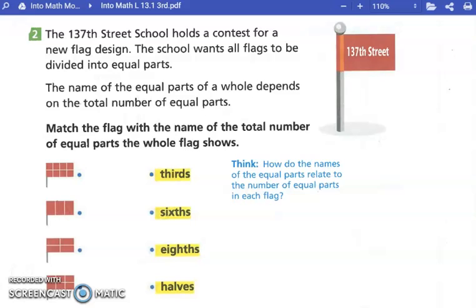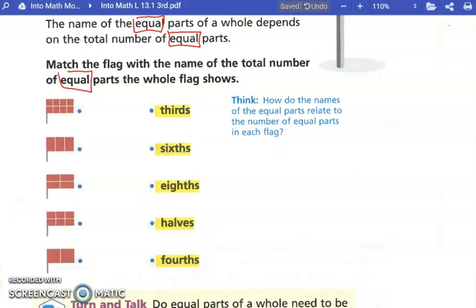The 137th Street School holds a contest for a new flag design. The school wants the flags to be divided into equal parts. Match the flag with the name of the total number of equal parts. The first flag is divided into how many equal parts? Eight. The second flag? Thirds. The third flag? Fourths. And the fourth flag? Sixths. And the last flag is not equal parts.